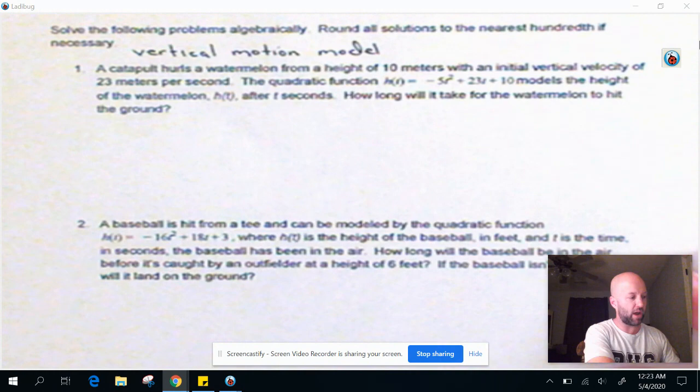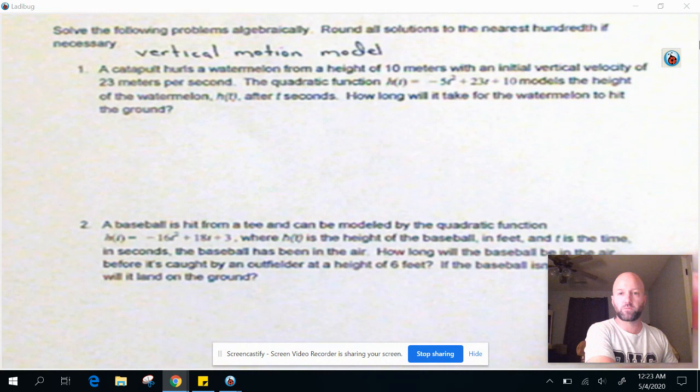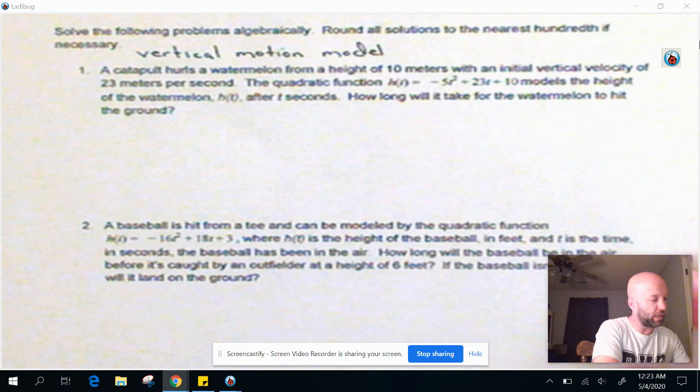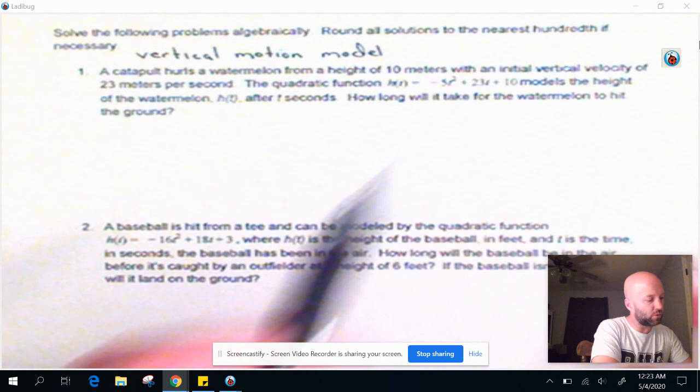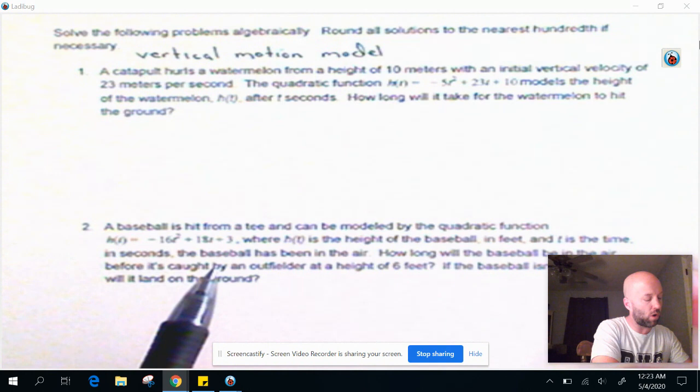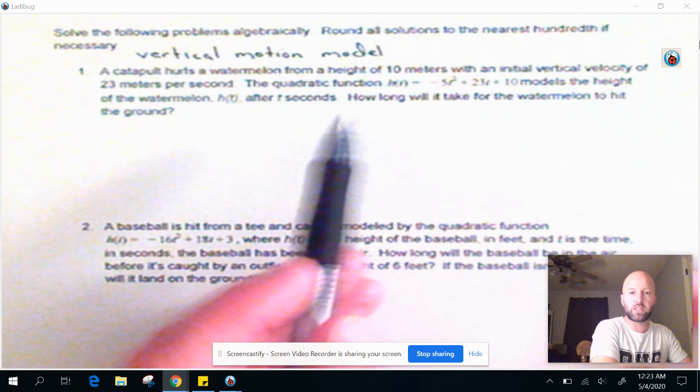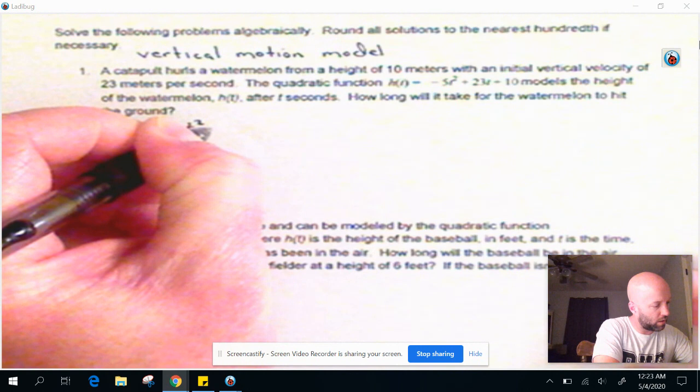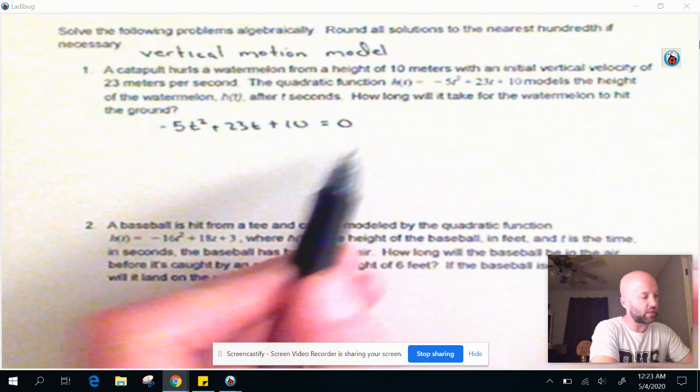So I'm going to take this thing right here. It's a quadratic because it's squared. And I'm going to set it equal to zero because this question says, a catapult hurls a watermelon from a height of 10 meters with an initial vertical velocity of 23 meters per second. That's our B value. The quadratic function h(t) = -5t² + 23t + 10 models the height of the watermelon h(t) at any given time, t seconds. So the question says, how long will it take for the watermelon to hit the ground? Well, the ground is at zero feet. So we're going to set this thing equal to zero. So -5t² + 23t + 10 = 0 because that's the height of the ground.